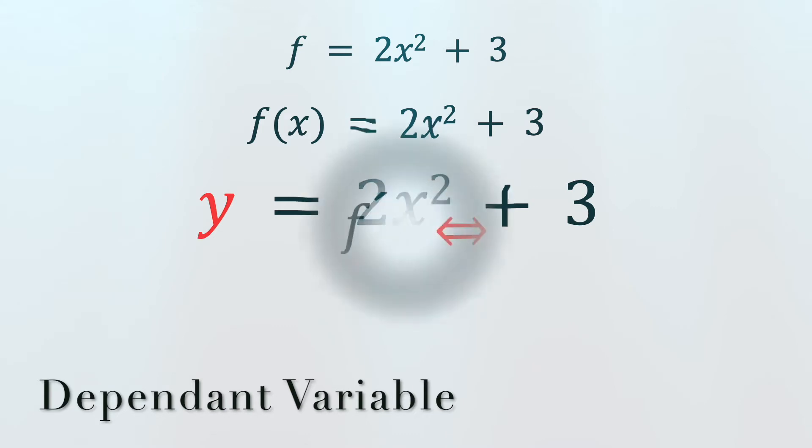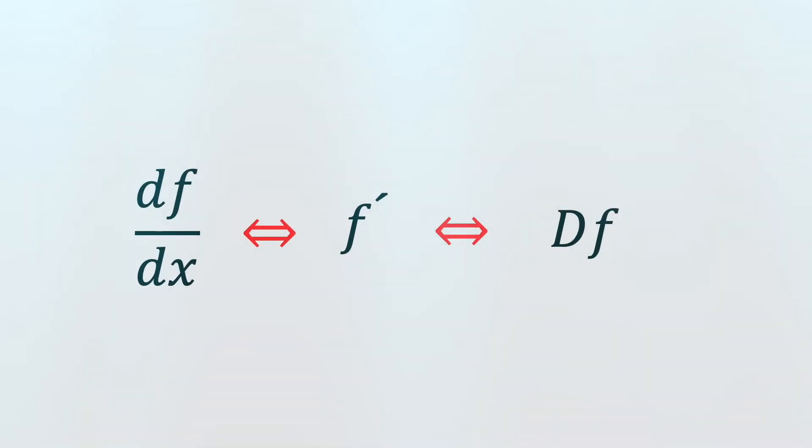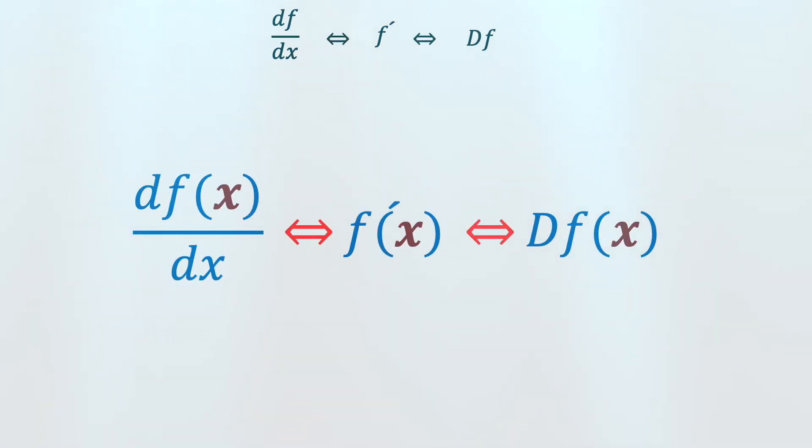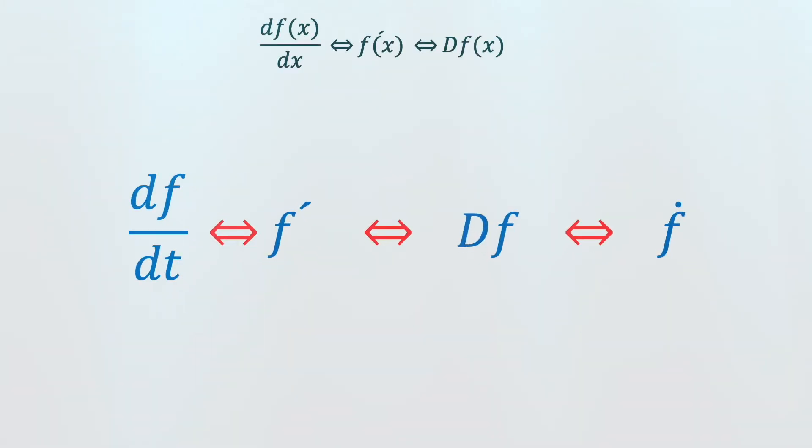The symbol with left and right arrows means "is equivalent to." If the function is written as f, then we can read it as df/dx ⇔ f' ⇔ Df. But if the function is written as f(x), then we can read it as df(x)/dx ⇔ f'(x) ⇔ Df(x). There is another notation.